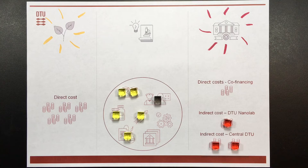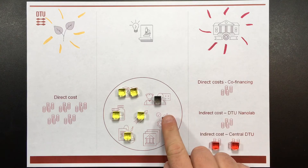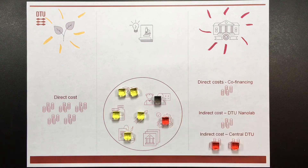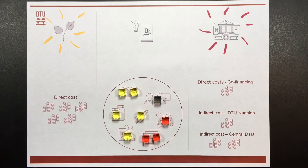The expenditure that is not a direct consequence of the project's activities are called indirect costs, and these are paid by DTU, either centrally from 101 or from NanoLab. All funding agencies have rules for what they consider direct costs and indirect costs. When you make your budget for a research application, carefully consider all costs to make sure that the direct costs are covered.